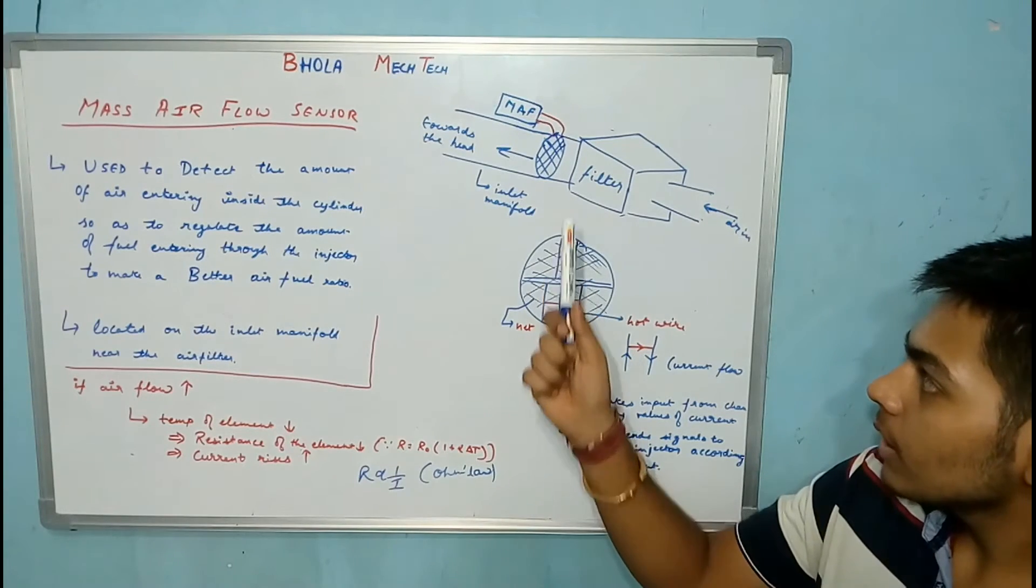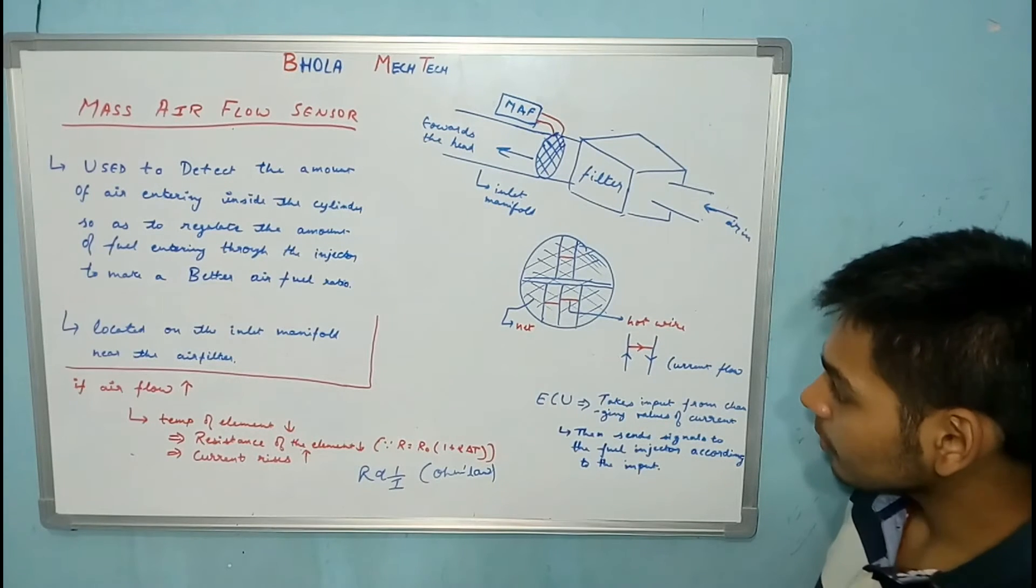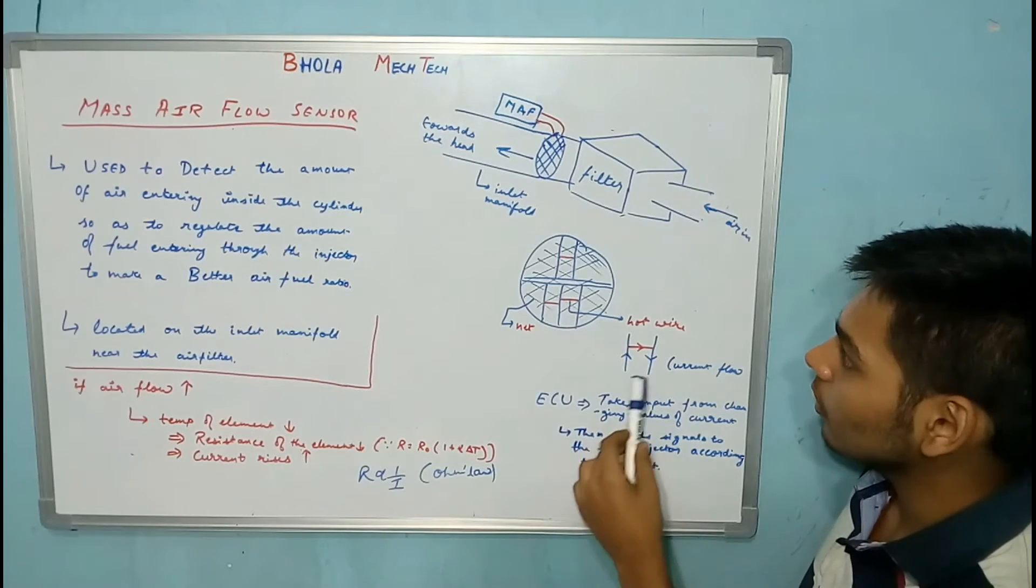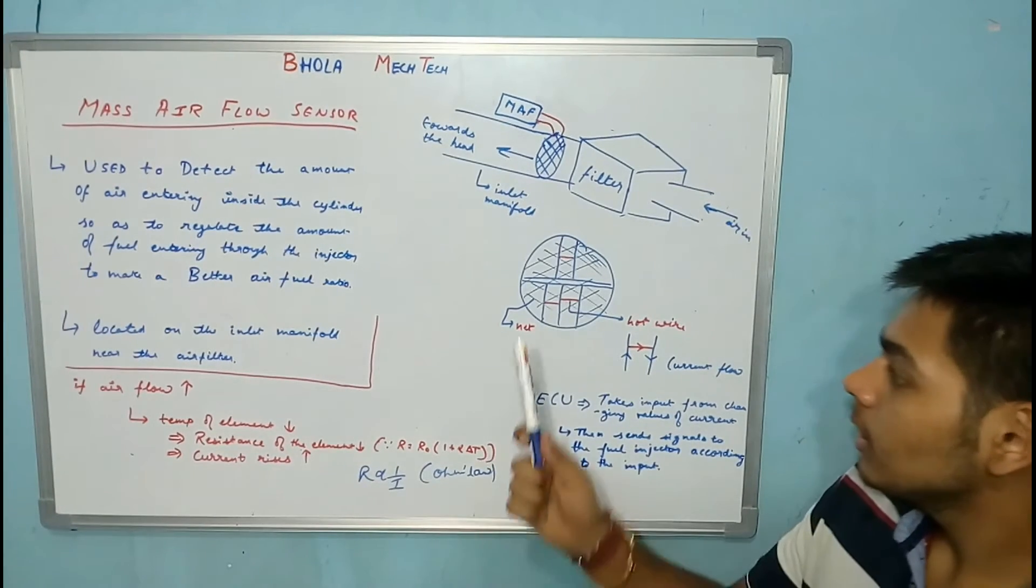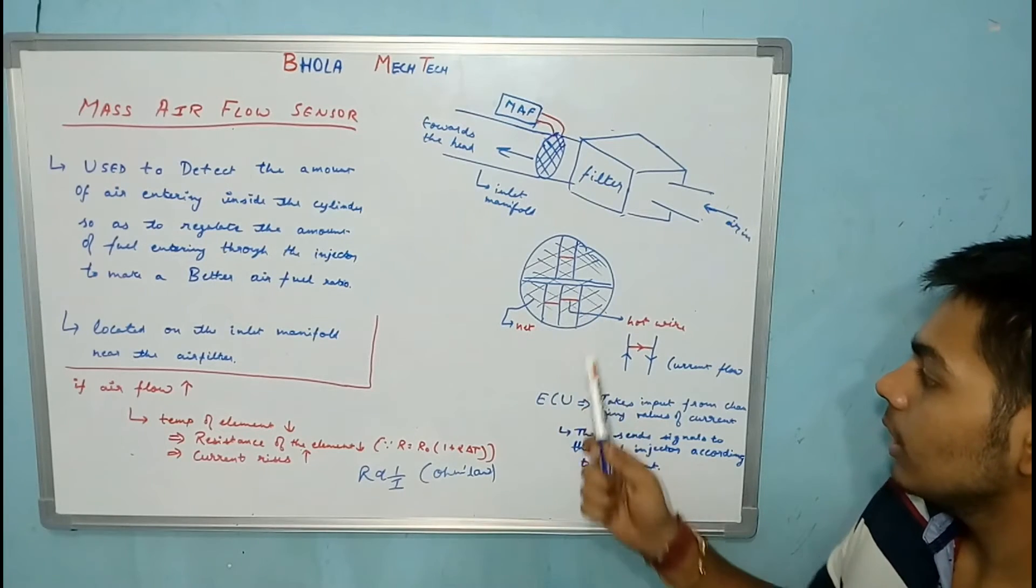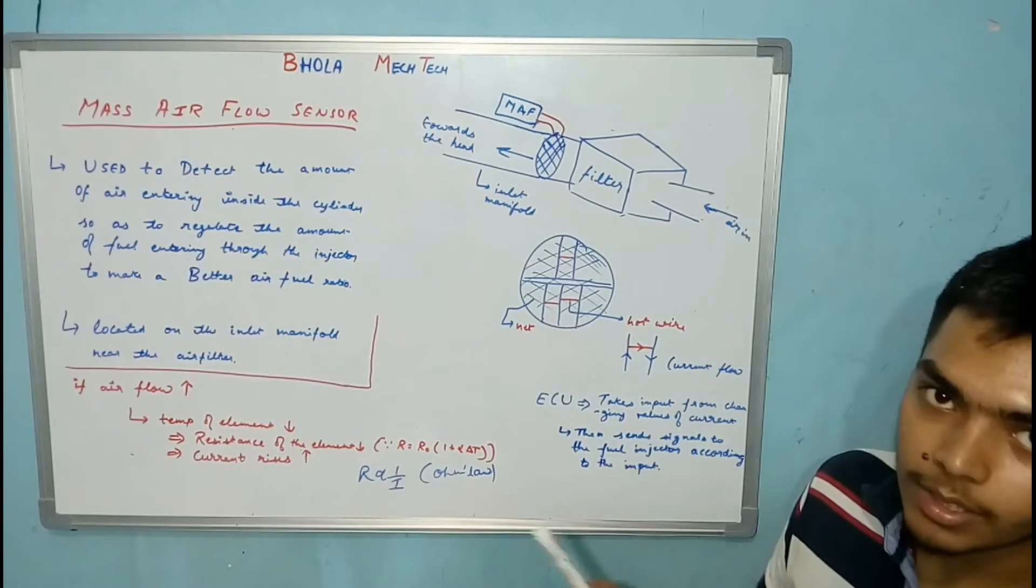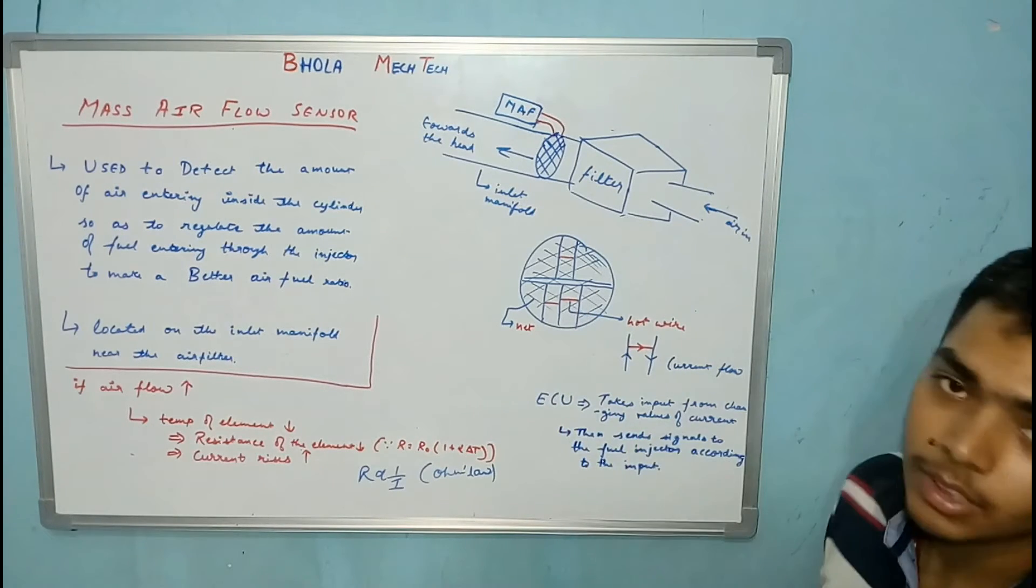The MAF sensor has a net-like structure in which there are three hot wires. Current is constantly passing to these hot wires because of the power supply to the MAF sensor. Since current is passing to these three hot wires, these hot wires have high resistance due to which the temperature rises, and hence these are called hot wires.